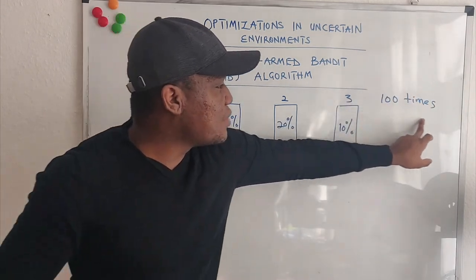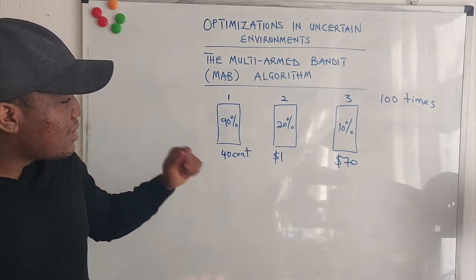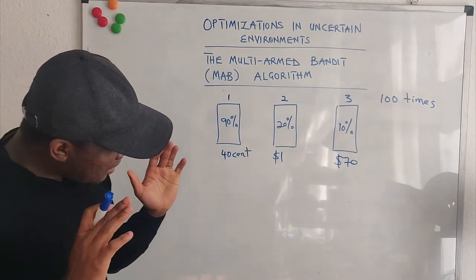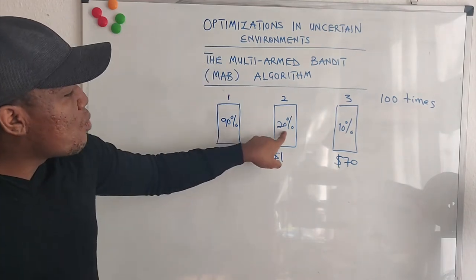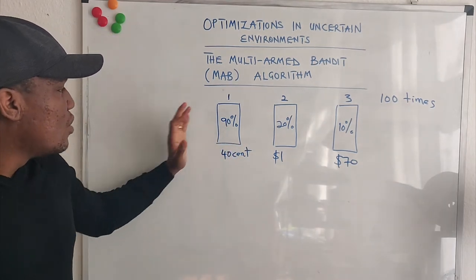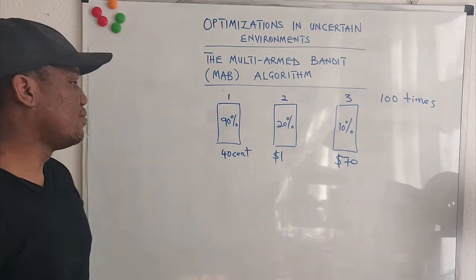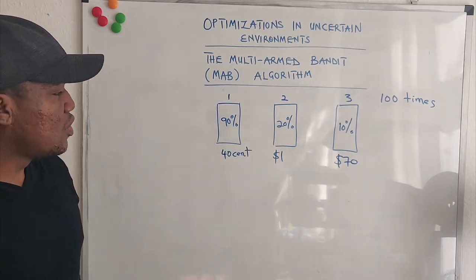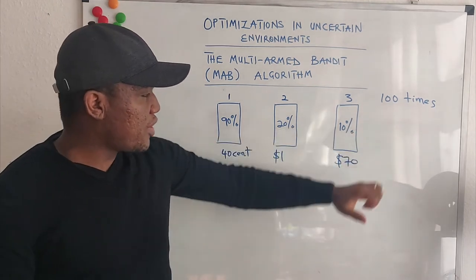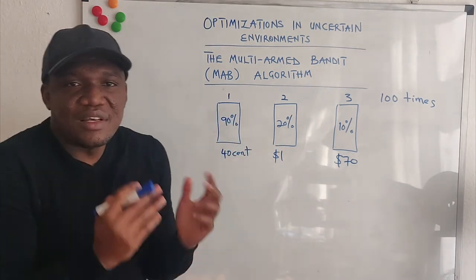And you have a limited number of times to interact in the environment. How will you take your actions such that you make the most money by the time you exhaust all your 100 trials? What makes it uncertain is you have no idea what these probabilities are. You don't know the probability of getting $0.40. Maybe I tell you that when you open door 1, you can get either $0.40 or nothing. When you open door 2, you can get either $1 or nothing. When you open door 3, you can get $70 or nothing. The frequency at which you will get these monies is unknown to you.